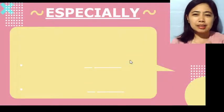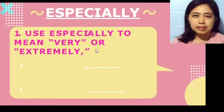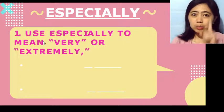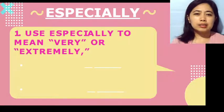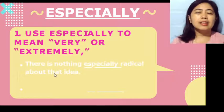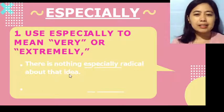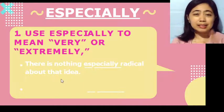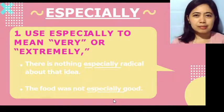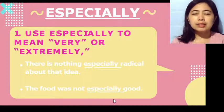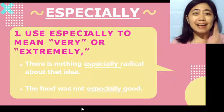Let's discuss the uses of 'especially.' The first use: use 'especially' to mean 'very' or 'extremely.' Example sentence: 'There is nothing especially radical about that idea' — meaning there is nothing very radical about that idea. Another sentence: 'The food was not especially good' — meaning the food is not extremely good. That's the first use.